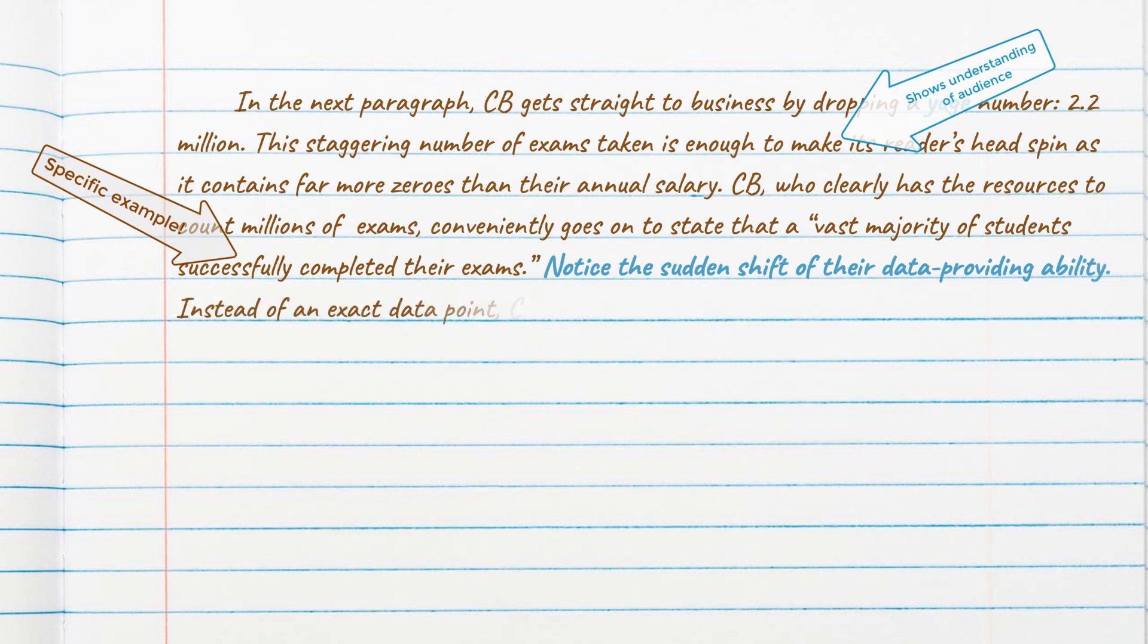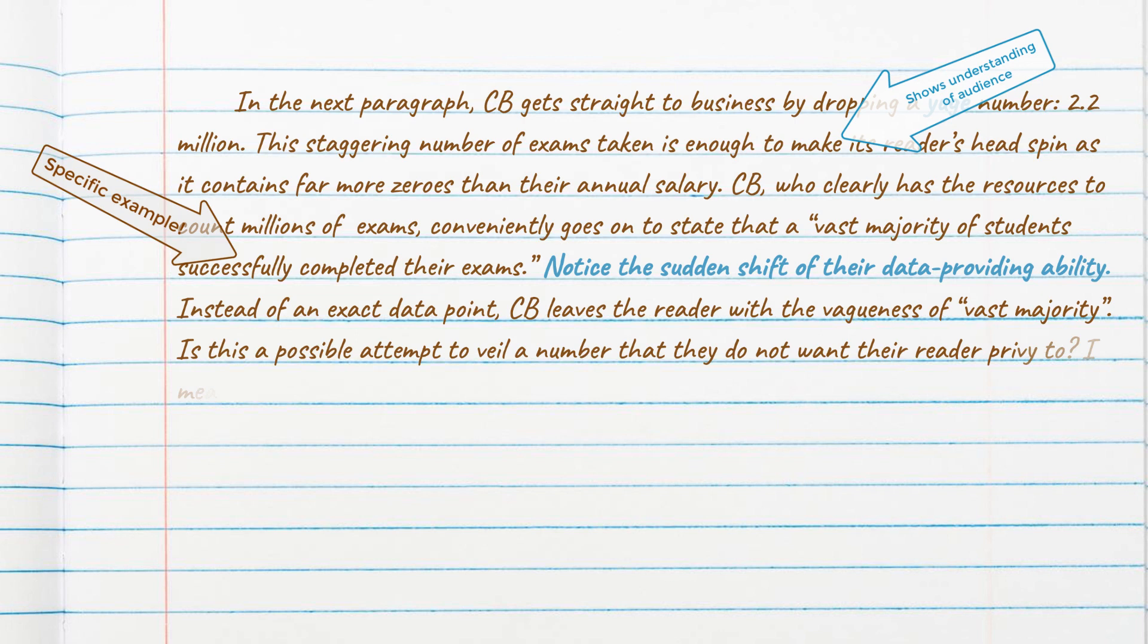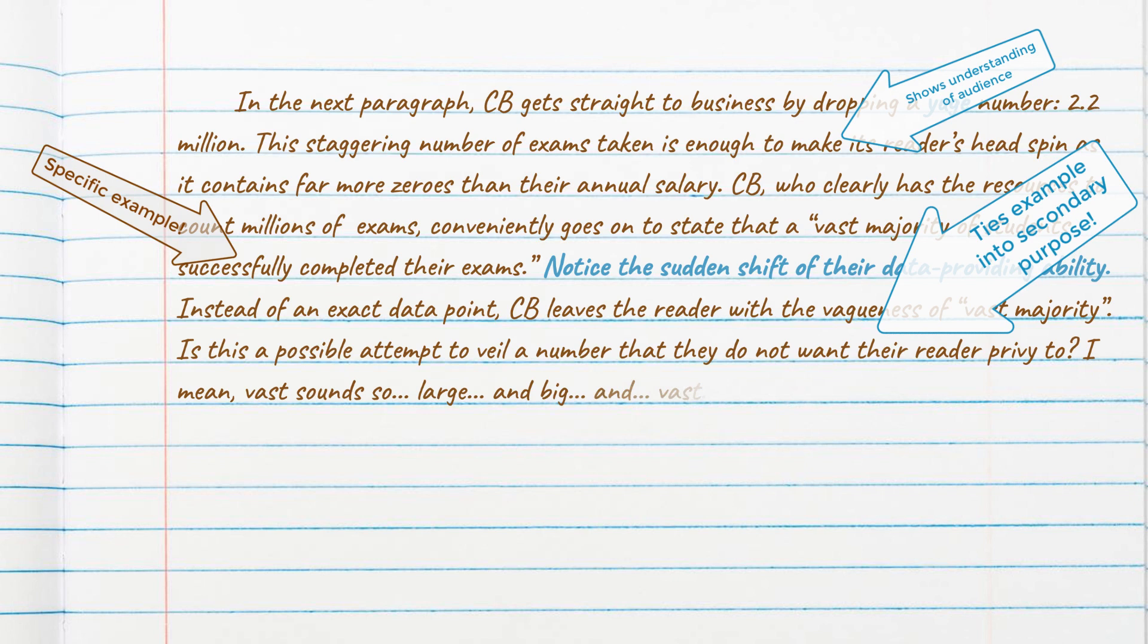Notice the sudden shift of their data-providing ability. Instead of an exact data point, CB leaves the reader with the vagueness of vast majority. Is this a possible attempt to veil a number that they do not want their reader privy to? I mean, vast sounds so large and big and vast. But in reality, vast majority could vary from 60 to 99% depending on whom you ask.